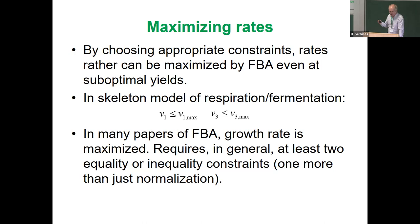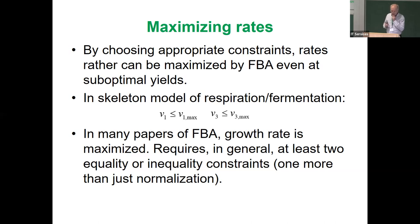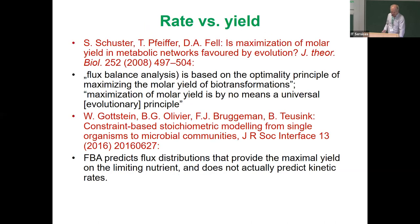In many FBA papers, growth rate is maximized. In a 2008 paper together with Thomas Pfeiffer and David Fell, we wrote that 'flux balance analysis is based on the optimality principle of maximizing the molar yield.' At that point I understood it as always maximizing yield — which is not true, as I have understood since. We argued that maximization of molar yield is by no means a universal evolutionary principle, pointing to examples like baker's yeast.